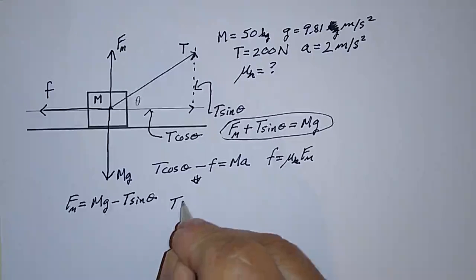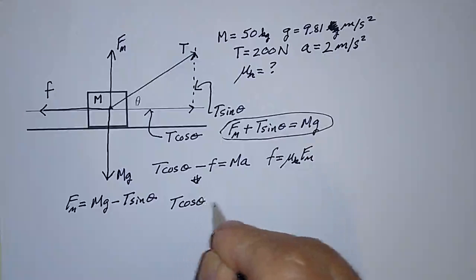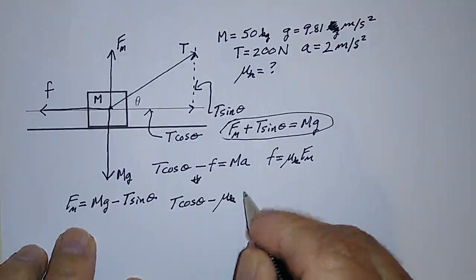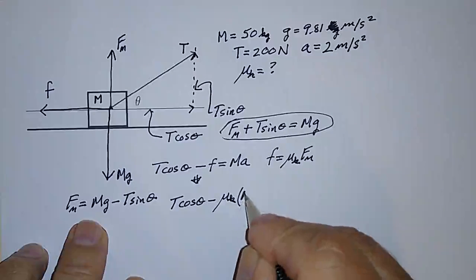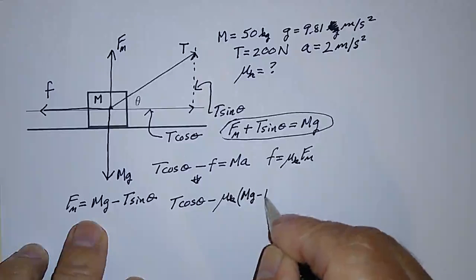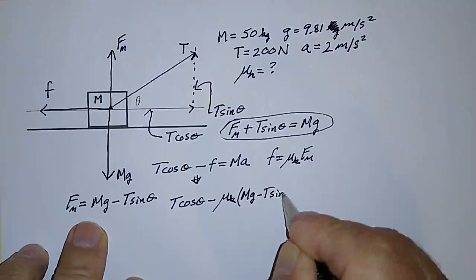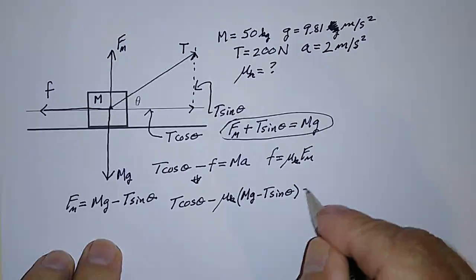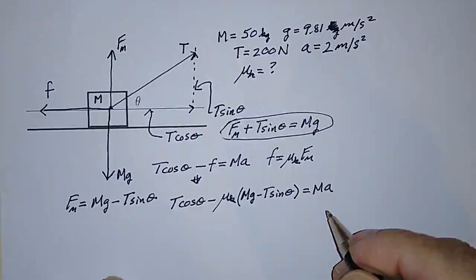So I can write this equation as T cosine theta minus the frictional force which is mu sub k times the normal force which is Mg minus T sine theta. And that has to be equal to M times A.